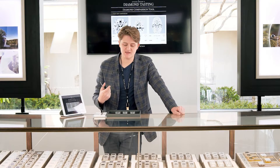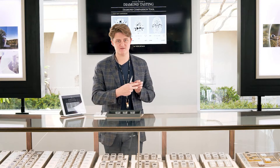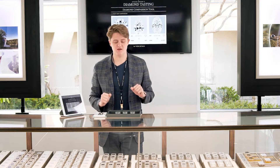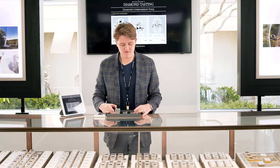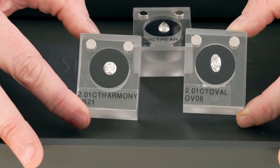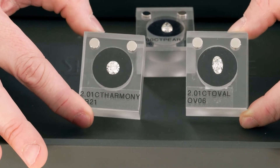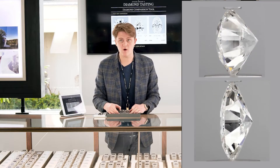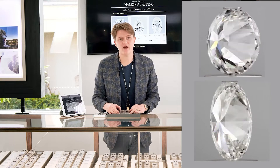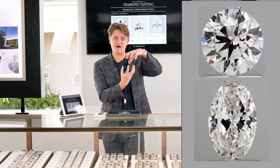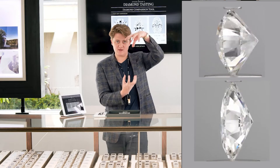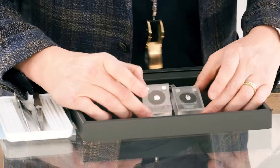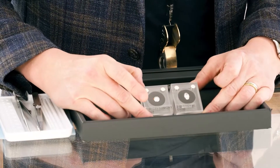The carat isn't necessarily showing how big the diamond is face up, because some diamonds can be what we call more spready in the industry. For example, I have a round diamond versus an oval diamond. An oval diamond is typically considered more spready than a round diamond, meaning even though both of these diamonds are weighing 2.01 carats, the oval diamond will face up larger because it's more spready rather than having the weight in the depth of the stone.